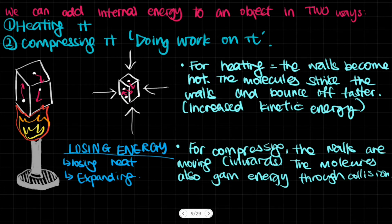So let's take a look at how that happens. For heating, it's pretty straightforward. The walls of a certain container—let's say there are three molecules in there and we heat it up—will become hot. The walls will become hotter, and the molecules are constantly moving at random motion and are going to collide with the walls.